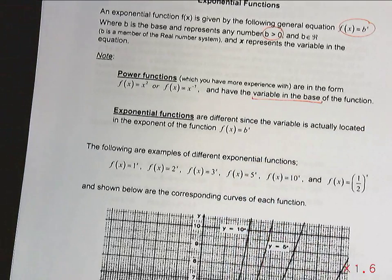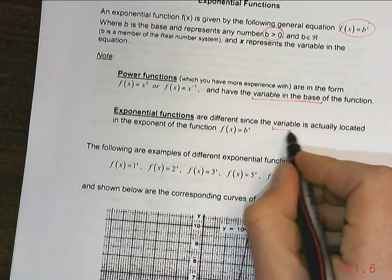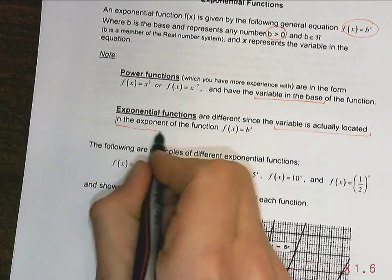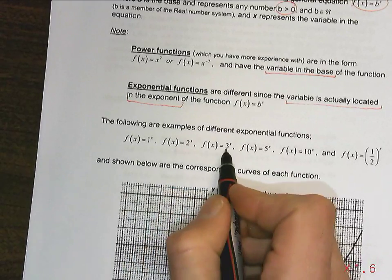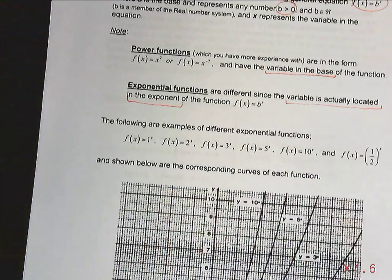However, what we're going to be working with, we're going to have a variable that is actually located in the exponent of the function. So here's some examples: 1 to the x, 2 to the x, 3 to the x, 5 to the x, and so on.